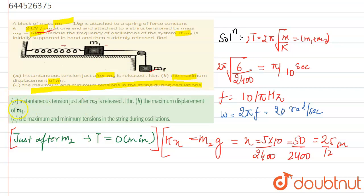Now for the maximum and minimum tension in the spring during oscillations, we found the minimum is 0. So the maximum tension T max will be equals to M2g plus M2 omega square A.